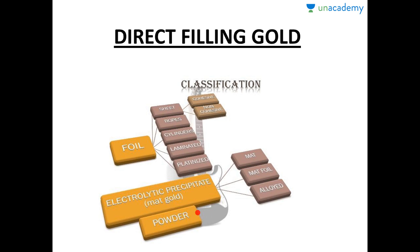Sheets can be cohesive or non-cohesive. The cohesive form is most suitable for compaction, as there are no surface contaminants and cohesion occurs effectively. In non-cohesive gold, there are no cohesive forces or atomic attraction between particles due to surface contaminants. Electrolytic precipitate is further divided into matte, which forms the bulk, matte foil, or alloyed.